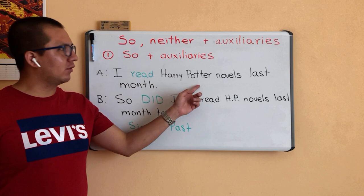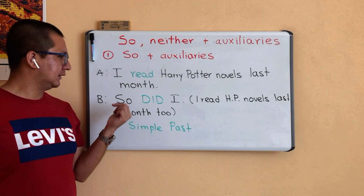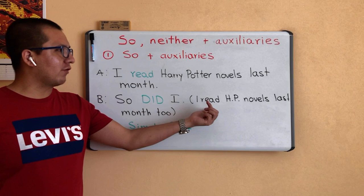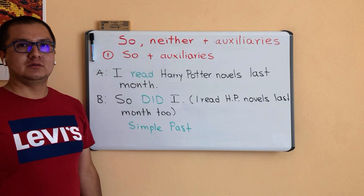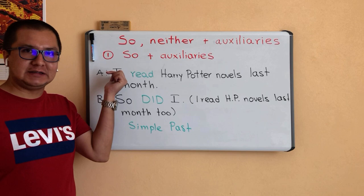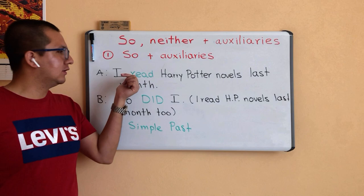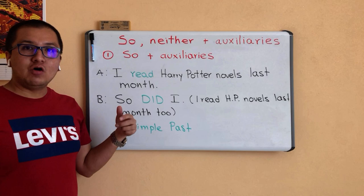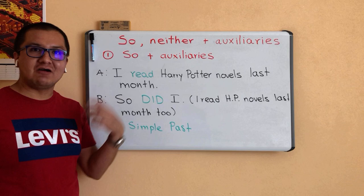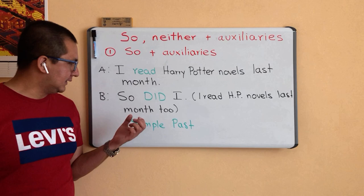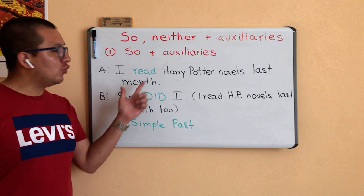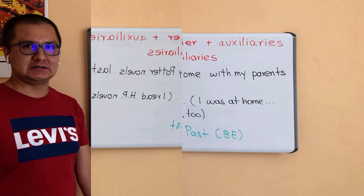Here is another example using the same structure. Person A says: 'I read Harry Potter novels last month.' And the other person says: 'So did I.' It means: I read Harry Potter novels last month too. So this person agrees with the other person. Look at the verb in green — 'read' is in simple past. And look at the auxiliary DID — DID is the auxiliary for simple past. Person B responds to an affirmative sentence.